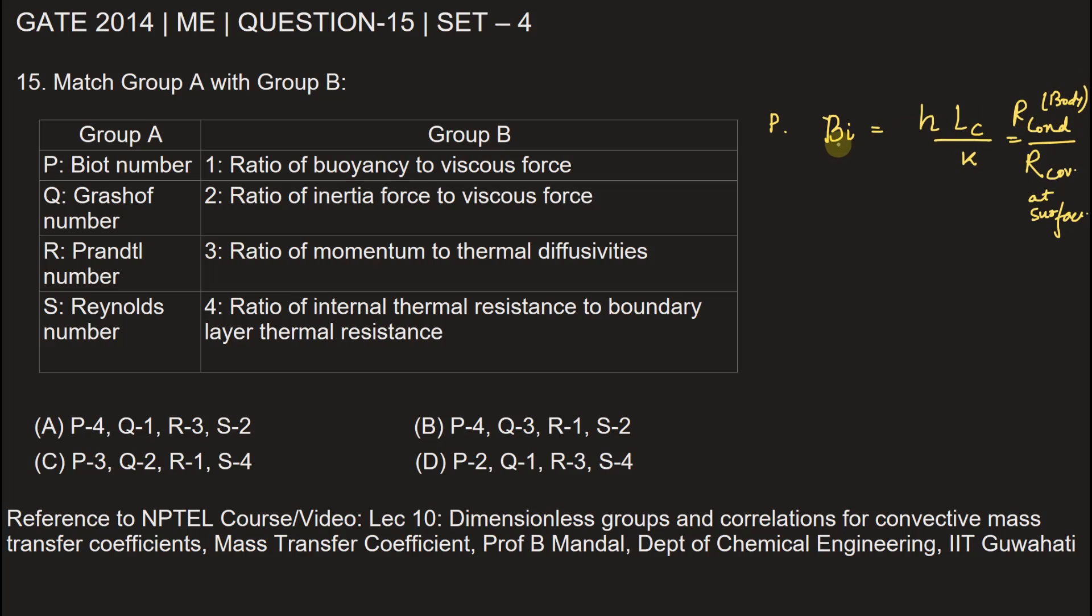So P, we can match P with 4, the ratio of internal thermal resistance to boundary layer thermal resistance. Second is